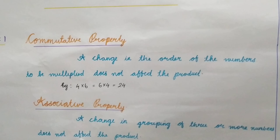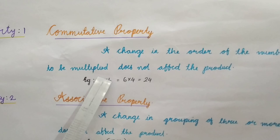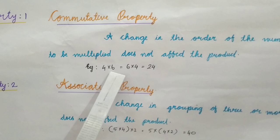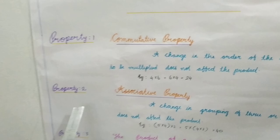Property number 1: Commutative Property. A change in the order of the numbers to be multiplied does not affect the product. Example: 4 x 6 is equal to 6 x 4 is equal to 24.